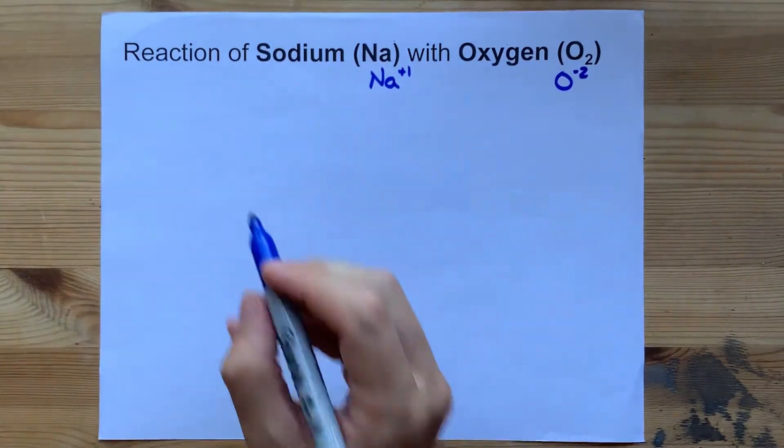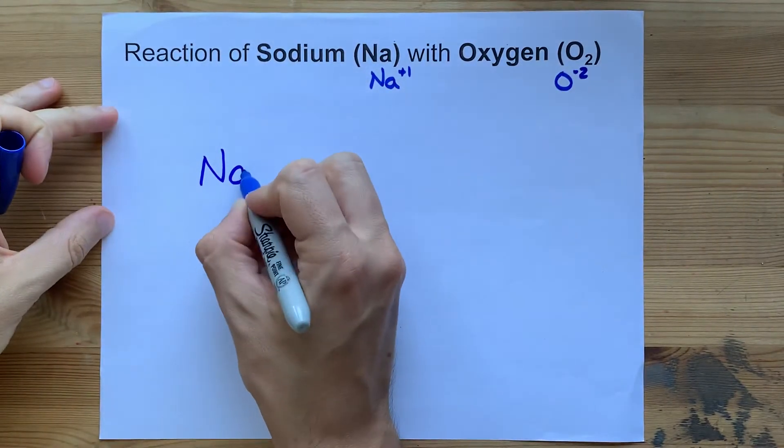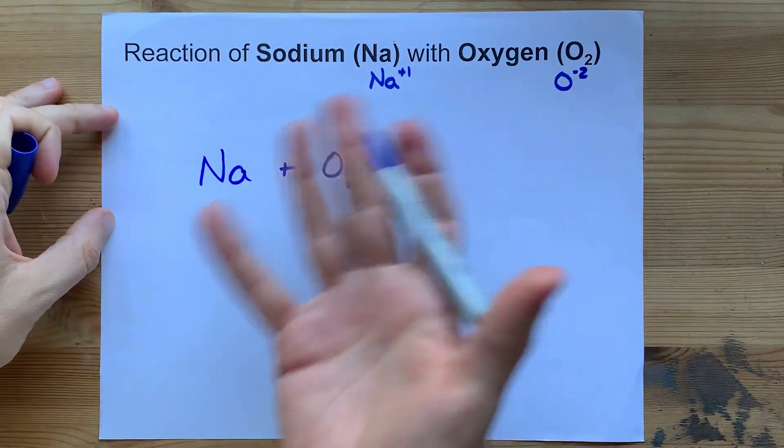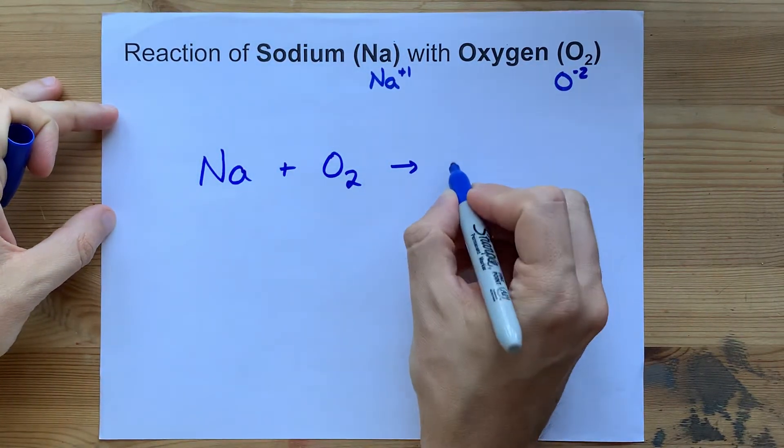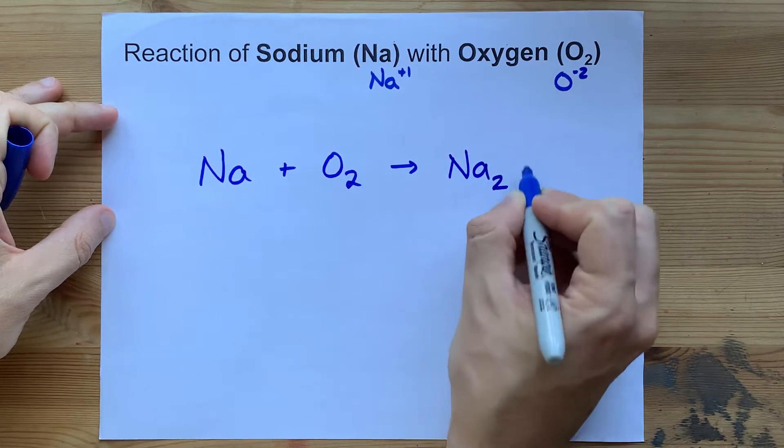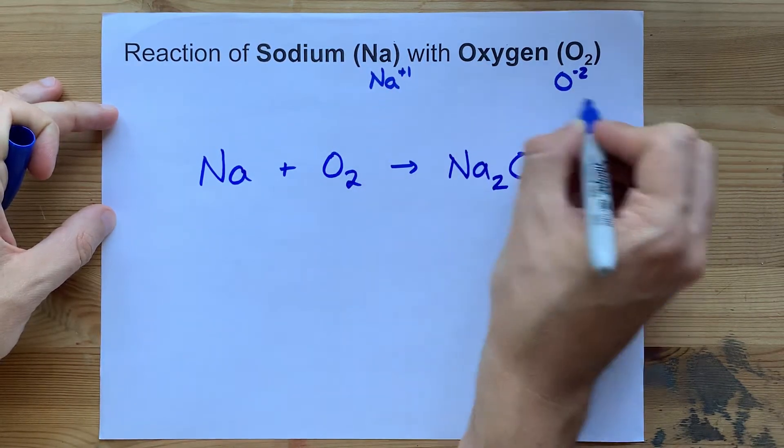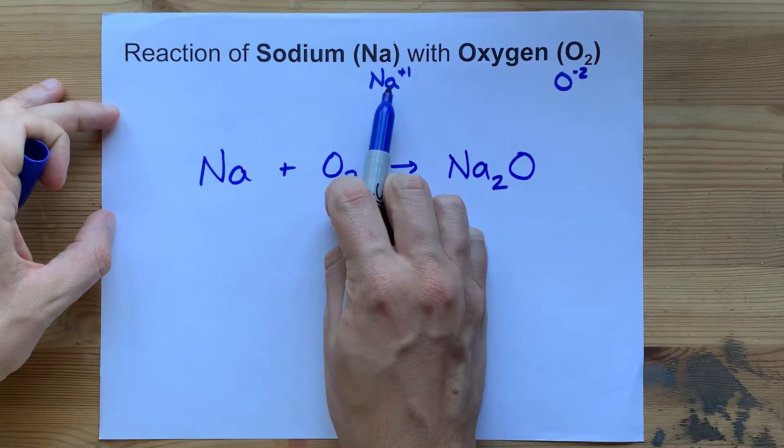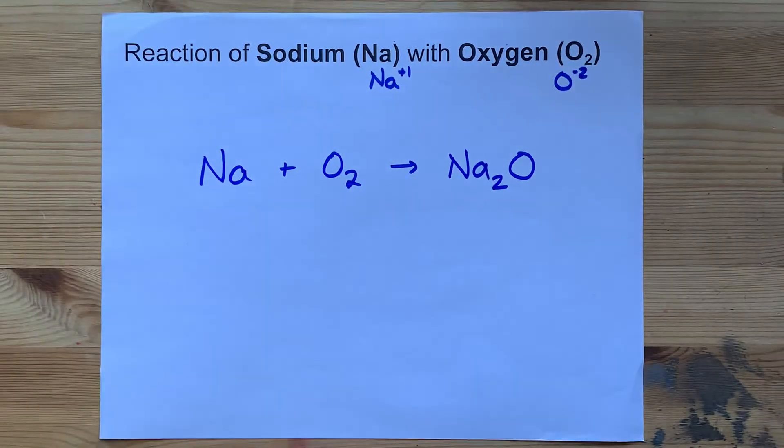The answer your teacher wants to hear is that sodium plus oxygen will make the ionic compound between the two, which is Na2O. Notice I crisscrossed the charges here. I need two of the Na's to cancel charge with one of the O's.